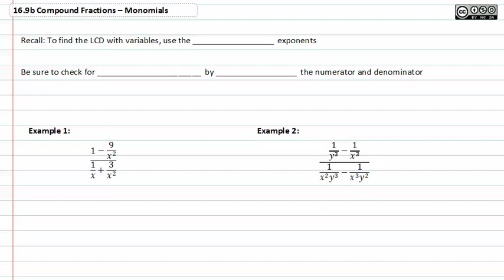When you have monomials in compound fractions, you need to remember that to find an LCD with variables, use the highest exponent. Be sure to check for reducing by factoring the numerator and denominator.